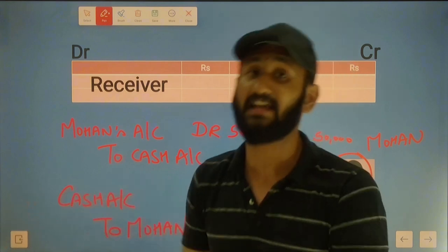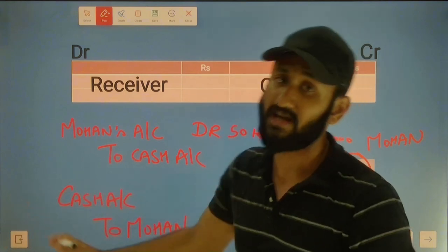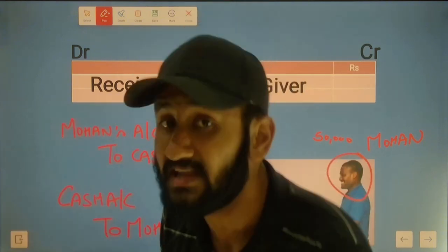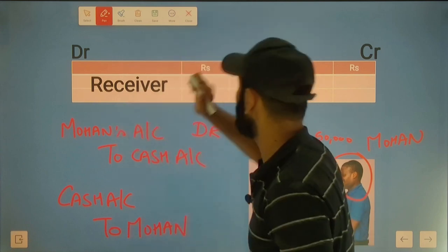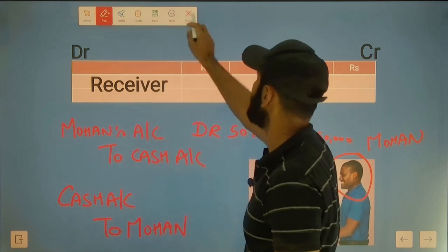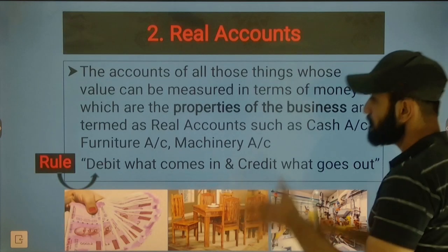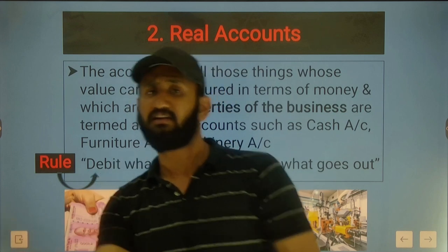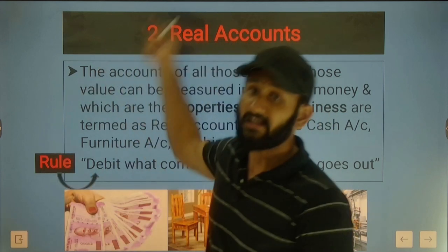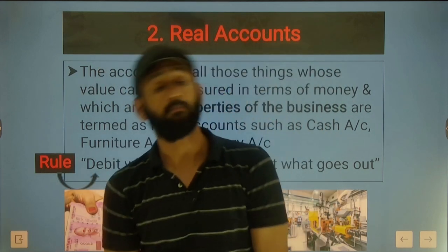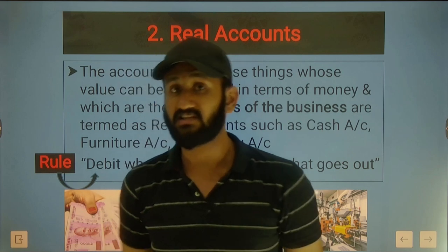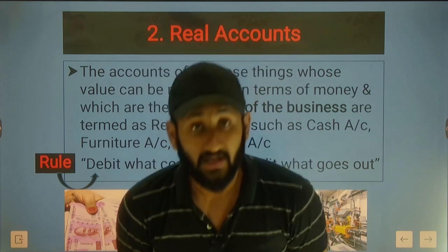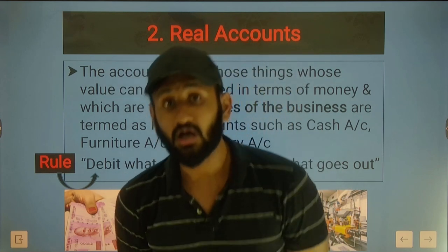Cash is debited or the other who gave the money - the giver - is credited. Now let's look at the cash side which is part of the real account rule. Moving to the impersonal account category, real account.